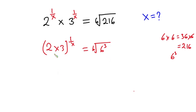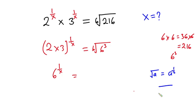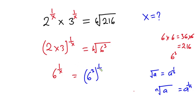So we have 2 times 3, which is 6, to the power 1 over x. And this is equal to — now the square root of a is the same as a to the power 1 half. More generally, the n-th root of a is the same as a to the power 1 over n. So this side becomes 6 to the third power, to the power 1 over 6.